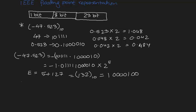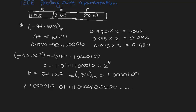Now we rewrite everything in IEEE floating point format. Since it's a negative number, the sign bit is 1. The next 8 bits are the exponent: 10000100. The remaining 23 bits come from the digits after the decimal point of the normalized number: 01111110000010, padded with zeros to make 23 bits total.